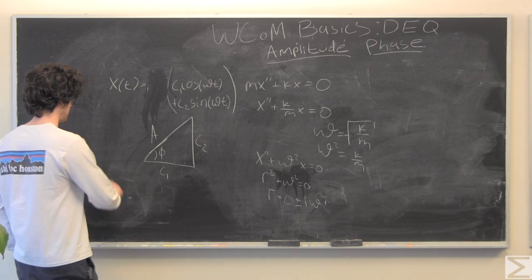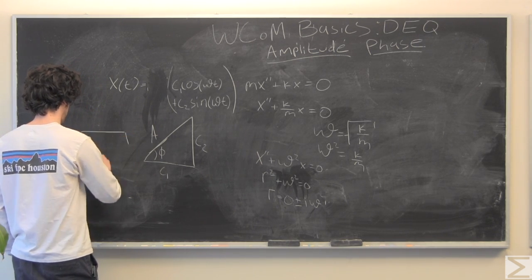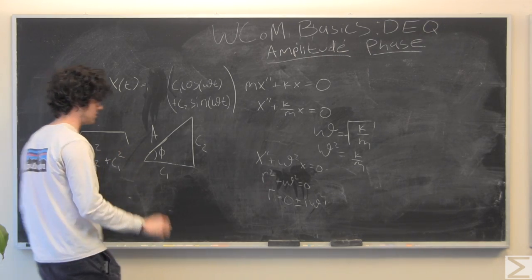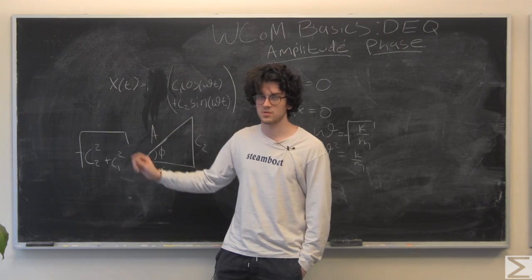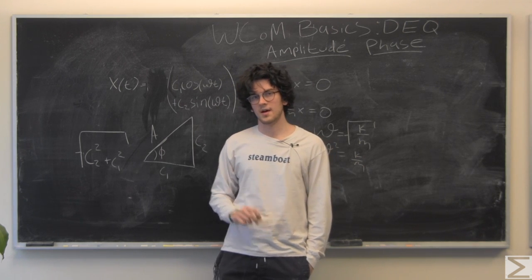Amplitude, obviously, is just, using Pythagorean theorem, is just the square root of c1 squared plus c2 squared.